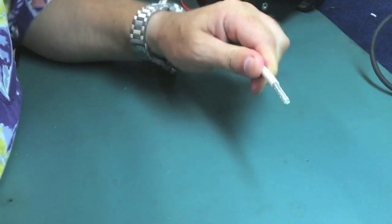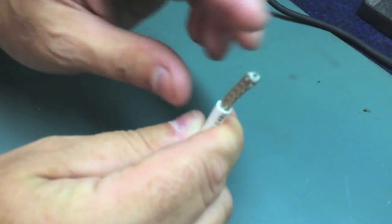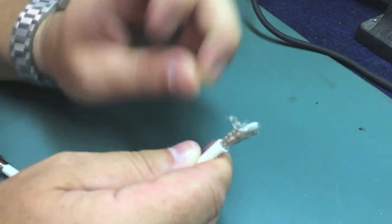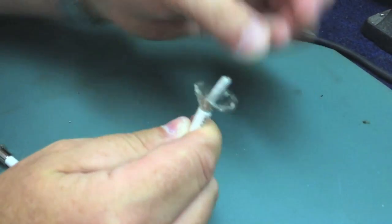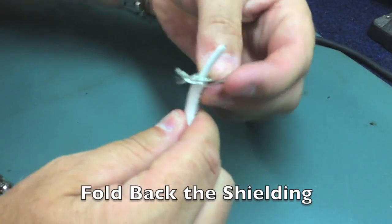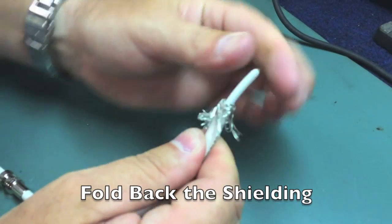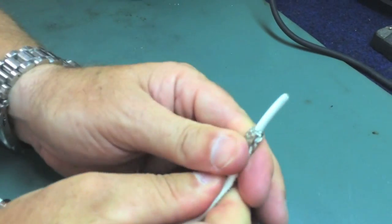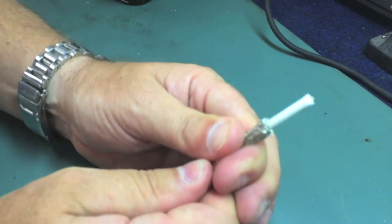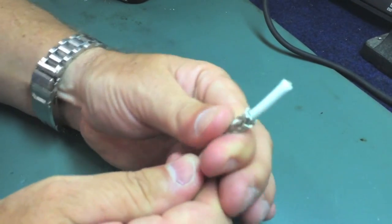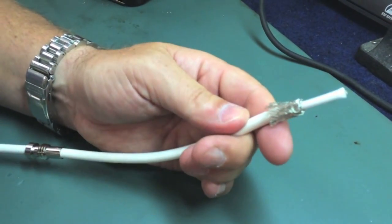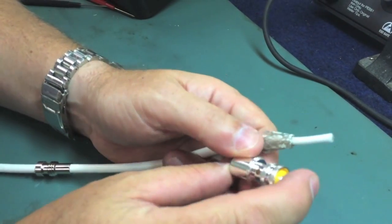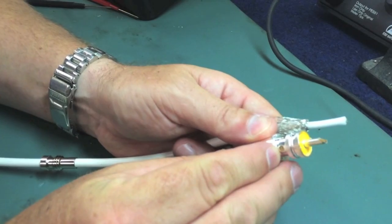Once that's done, you've exposed the inside shielding. You want to take the inside shielding and fold it back over the outside jacket like so. The reason you do this is that the outside shield will be showing up through these tiny little holes that you will be soldering later on in the project.